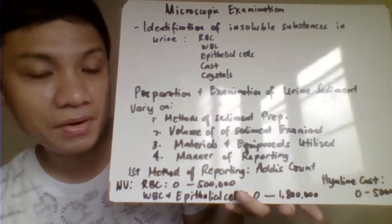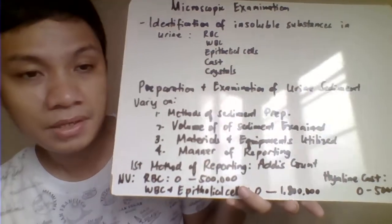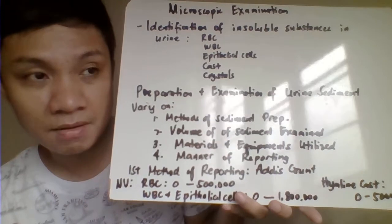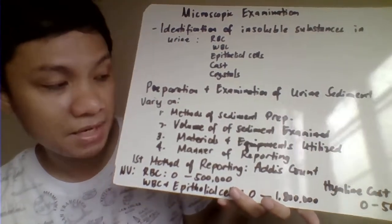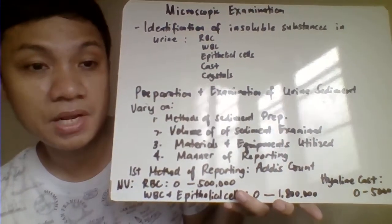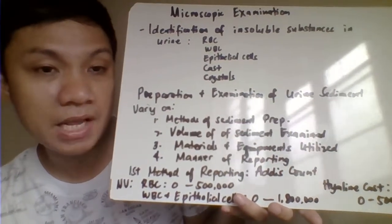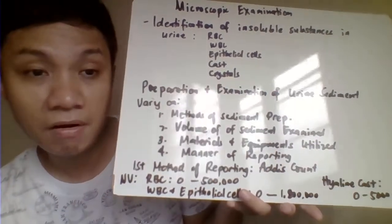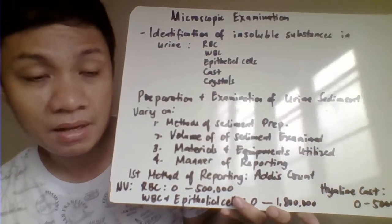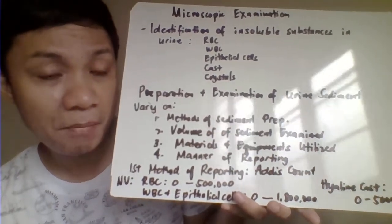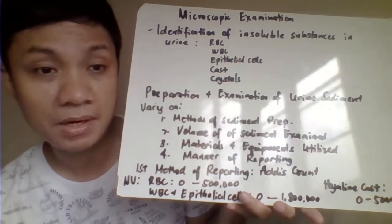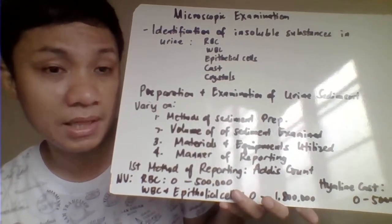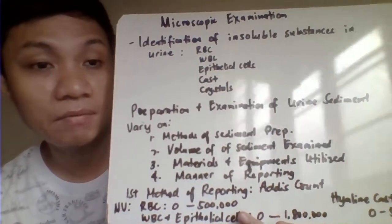Some labs also have variation in the volume of the specimen or sediment examined under the microscope — the volume of the sediment or urine sample put on the slide for examination. They also vary in the materials and equipment used in preparation of your sediment for microscopic examination. Another variation is the manner of reporting: whether reported as average number per 10 consecutive fields under the microscope, or reported in semi-quantitative terms. Later on, we'll be discussing the different methods of reporting.